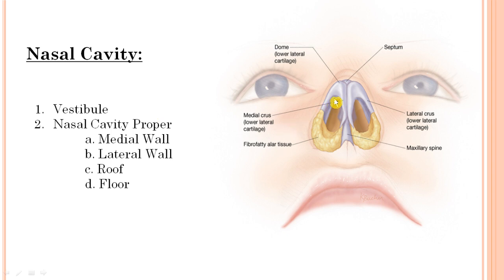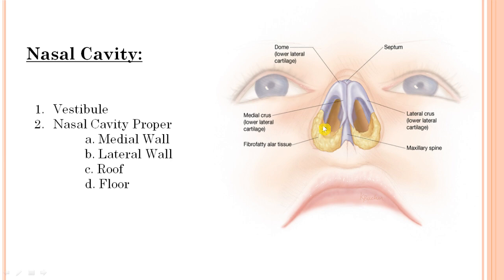The vestibule is the portion of the nose lined by skin and contains the nasal hairs. The nasal cavity proper is lined by mucous membrane and has a medial wall, lateral wall, a roof, and a floor. We have discussed the medial wall, roof, and floor in the previous video, so watch that before this one. In this video we will cover the lateral wall of the nasal cavity.